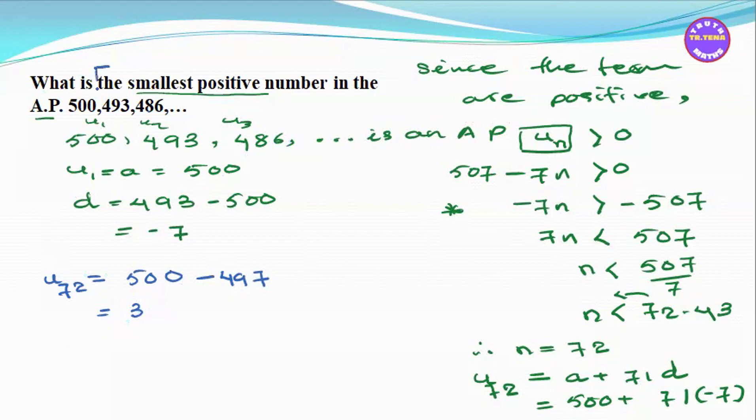The smallest positive number of the AP is 3.